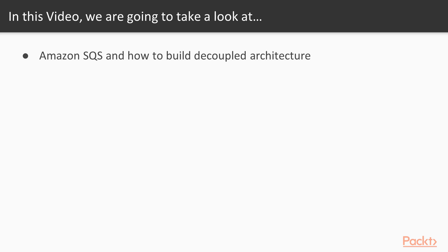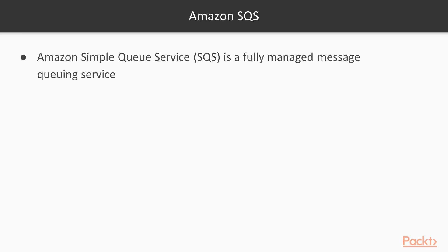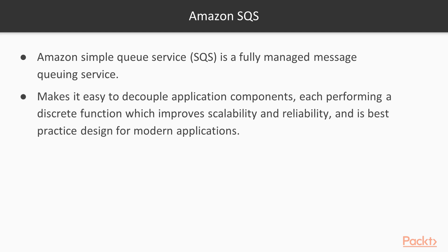In this video we'll be taking a look at Amazon SQS and how to build decoupled architecture. Amazon Simple Queue Service is a fully managed message queuing service that makes it easy to decouple application components, each performing a discrete function, which improves scalability and reliability and is best practice design for modern applications.